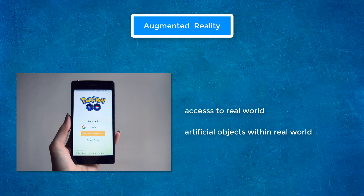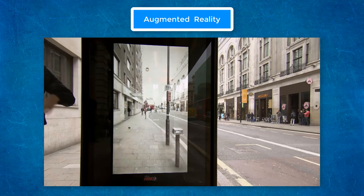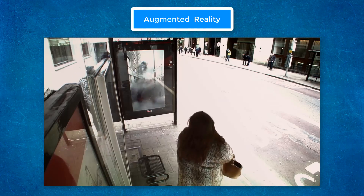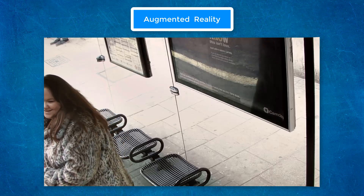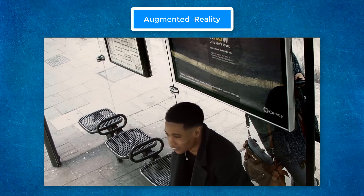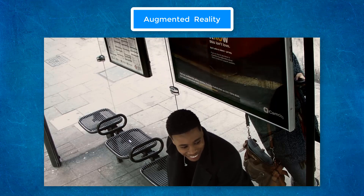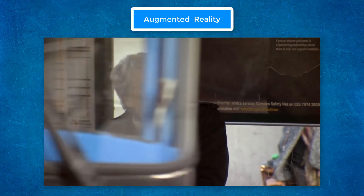Unlike virtual reality, in augmented reality you can still see your real world. Let's look at Pepsi's bus stop prank. Did you see that everything was from the real world? But that meteor was artificial, along with the effect it caused. That was amazing. Now let's see some really cool and productive things.